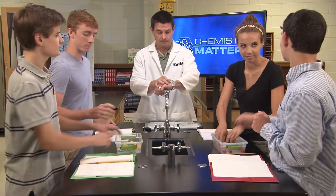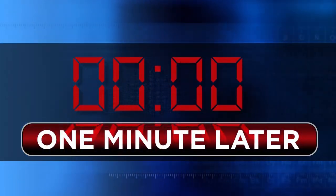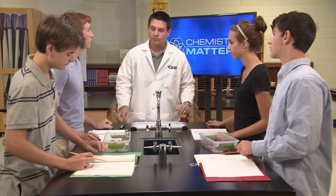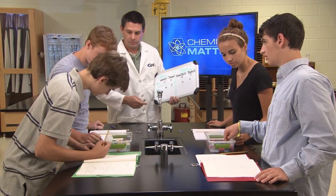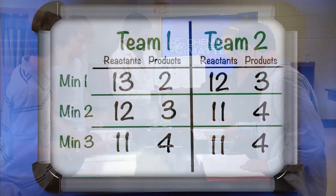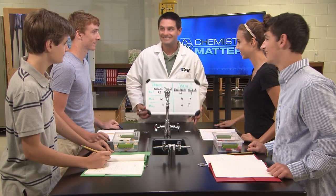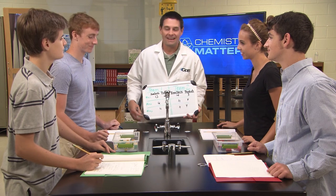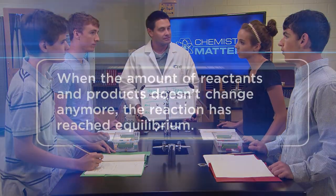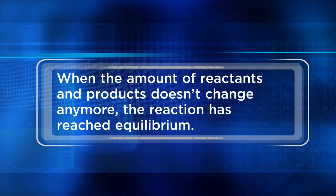Ready? Begin. Stop — time is up. Count your reactants and products again. We got four products and 11 reactants again — that's exactly what we got, too. Why isn't the amount of our products increasing anymore? That means your forward and reverse rates are the same — that's equilibrium, right? We reached equilibrium. Very good. How did our data tell you that we had reached equilibrium? When the amount of reactants and products doesn't change anymore, the reaction has reached equilibrium.